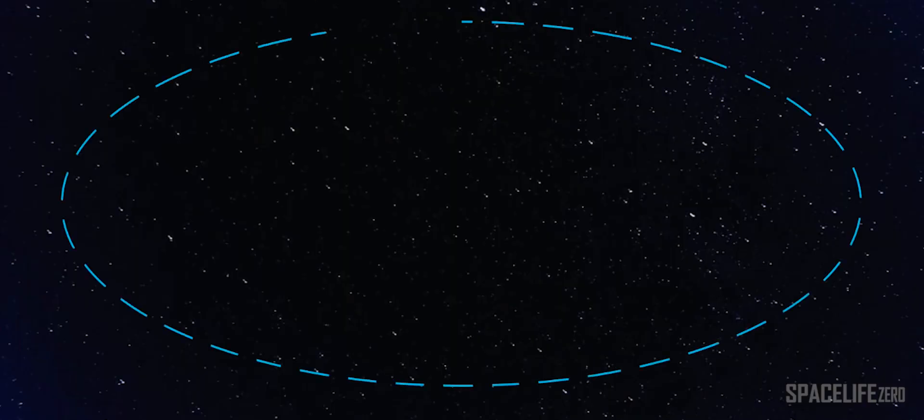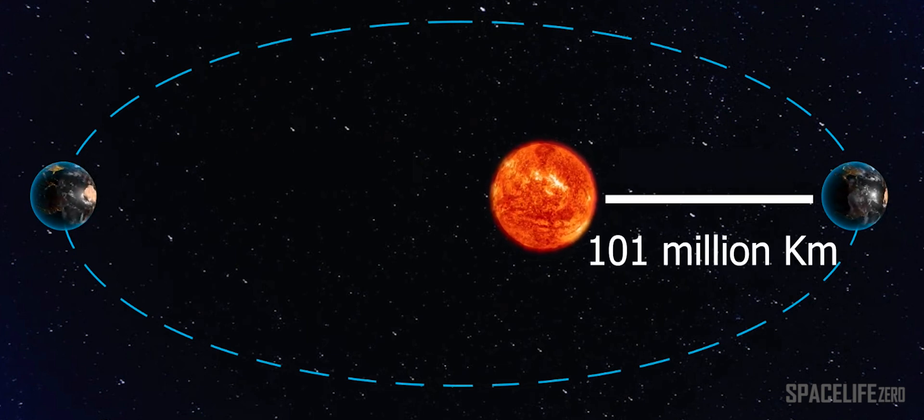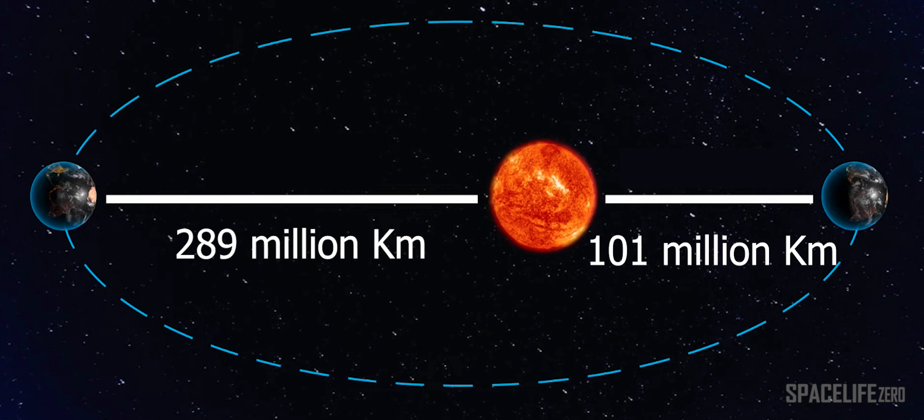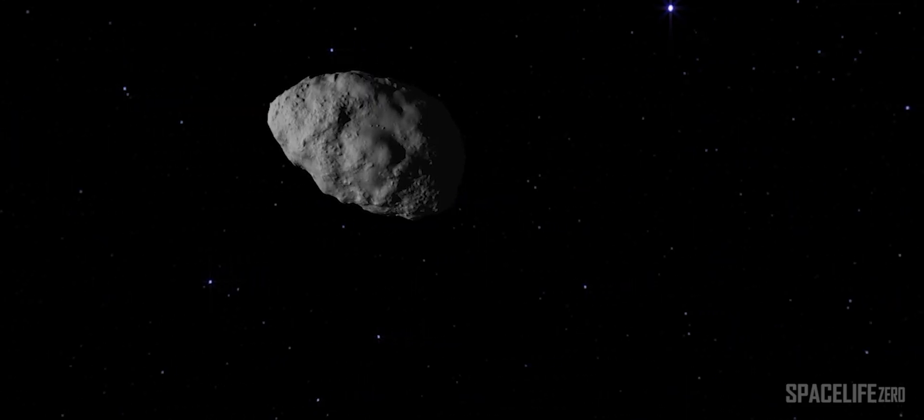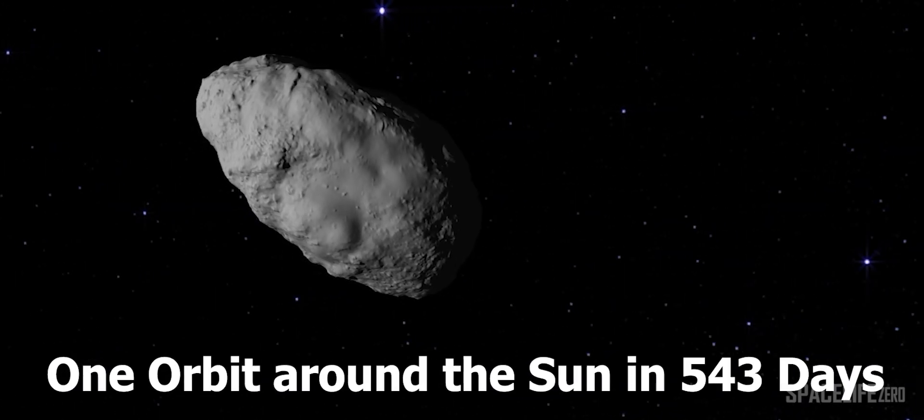Its perihelion, or the nearest point to the Sun, is 101 million kilometers, and the aphelion, or the farthest point from the Sun, is 289 million kilometers. The asteroid takes about 543 days to complete one orbit around the Sun.